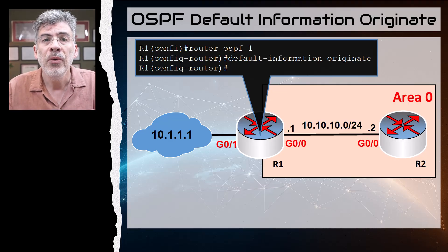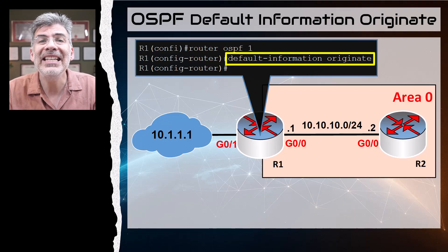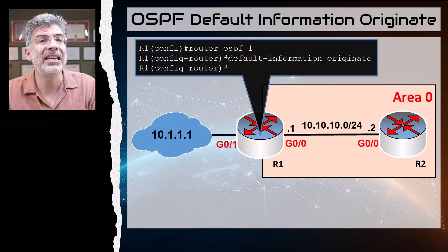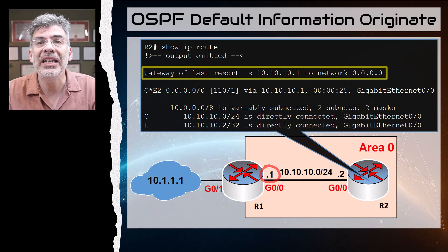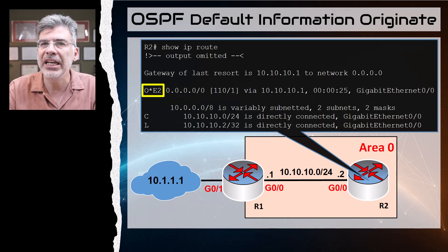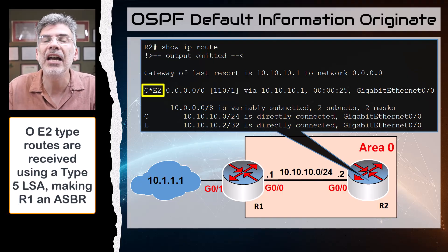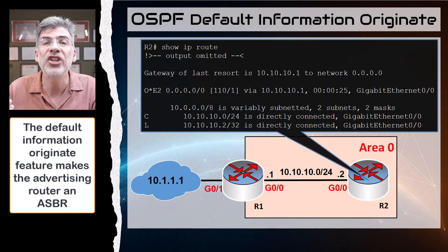Now let's advertise this default route using the default-information originate feature. We go into R1 and into the OSPF configuration mode and issue this command. That's it — just one command that takes any default route existing in the local routing table and advertises it using OSPF. On R2 we can see a gateway of last resort with the next hop IP of R1, and further down we see it was learned via OSPF. It appears as an external type 2 route, which means R1 advertised it using a Type 5 LSA — and that makes R1 an ASBR, since it is introducing a network from outside the OSPF domain.